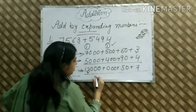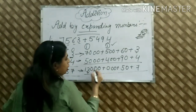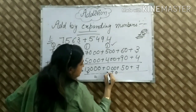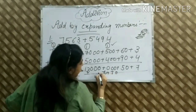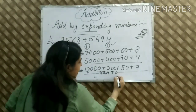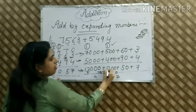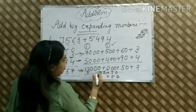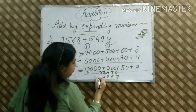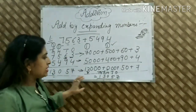If we write in expanding form: ones place is 7, tens place is 5, hundreds place is 0, thousands place is 3, and ten-thousands place is 1. Same answer: 13,057.